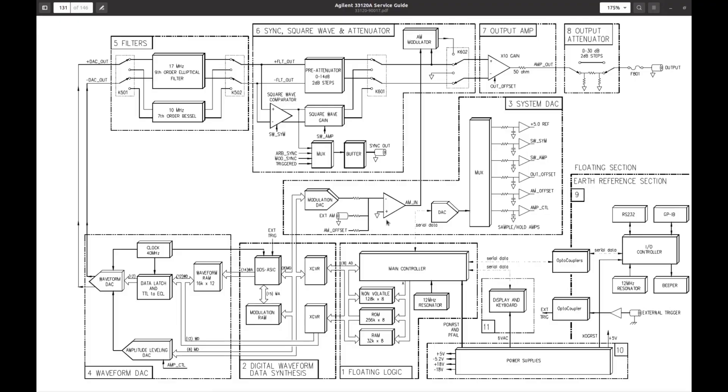Let's take a look at this block diagram I found in the service manual. This is the power supply. Main controller is here with some microprocessor and RAM. This is the digital waveform data synthesis block with some special ASIC. Modulation RAM is here. Waveform RAM is here. 40MHz clock is here. Waveform DAC.